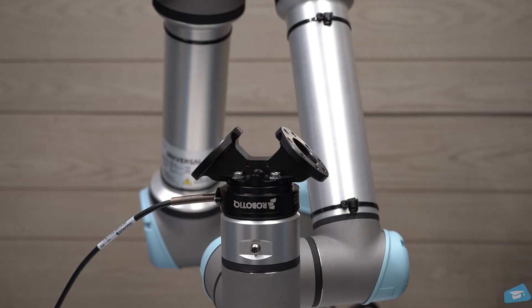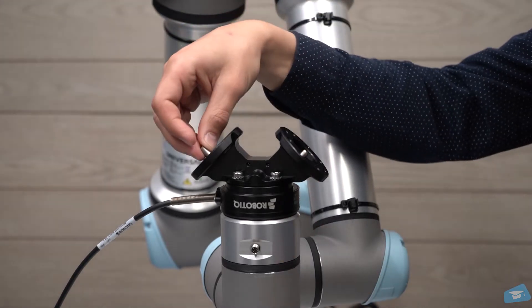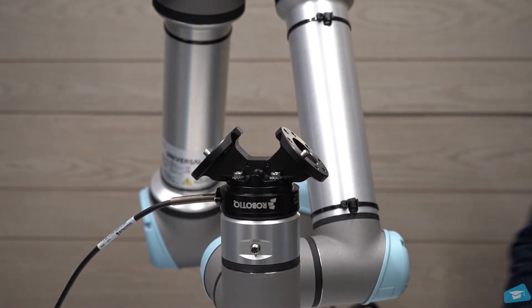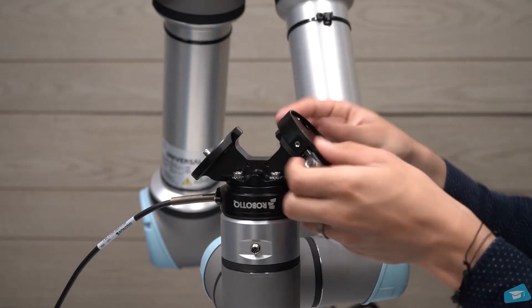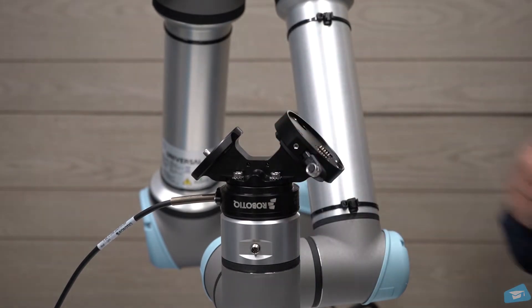Insert the dowel pin in the bracket stop part. The gripper orientation will depend on the pin location. Place it wisely. Align the coupling with the dowel pin and secure it with the four screws and their respective tool lock washers.